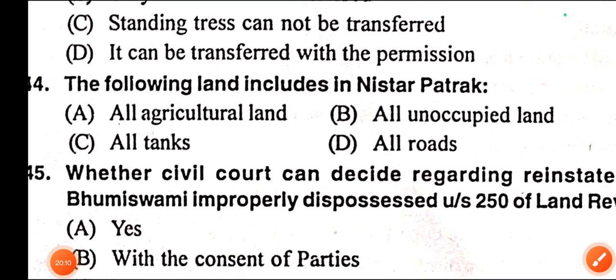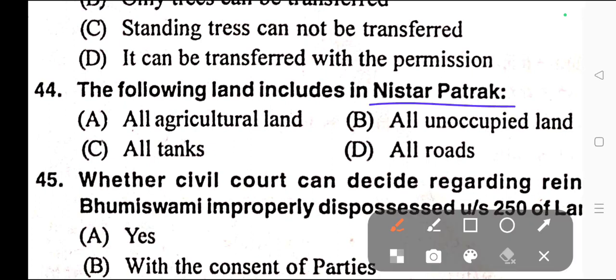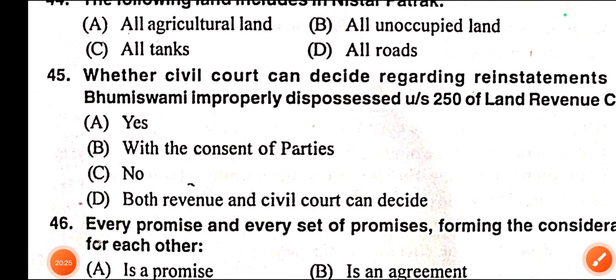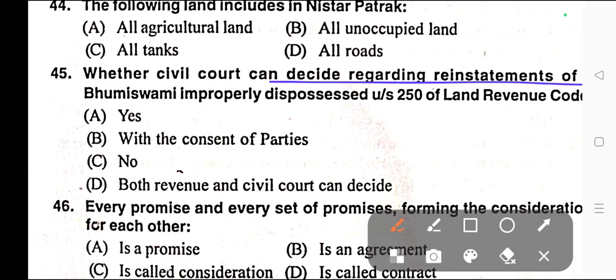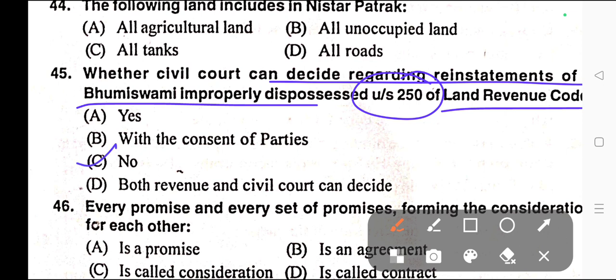Question number forty-four: The following land includes Mr Patrak — A) All agriculture land, B) All unoccupied land, C) All tanks, D) All roads. Correct answer is option B — all unoccupied land. Question number forty-five: Whether civil court can decide regarding reinstatement of the Bhuiswami improperly dispossessed under Section 250 of the Land Revenue Code? Options: A) Yes, B) With consent of parties, C) No, D) Both revenue and civil court can decide. Correct answer is option C — No.